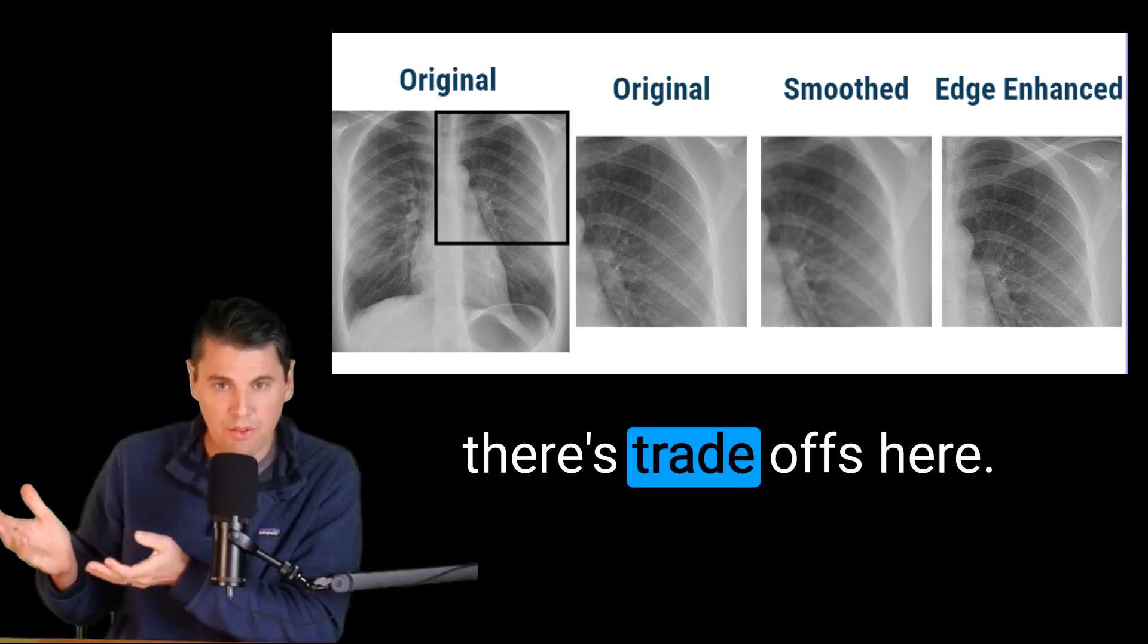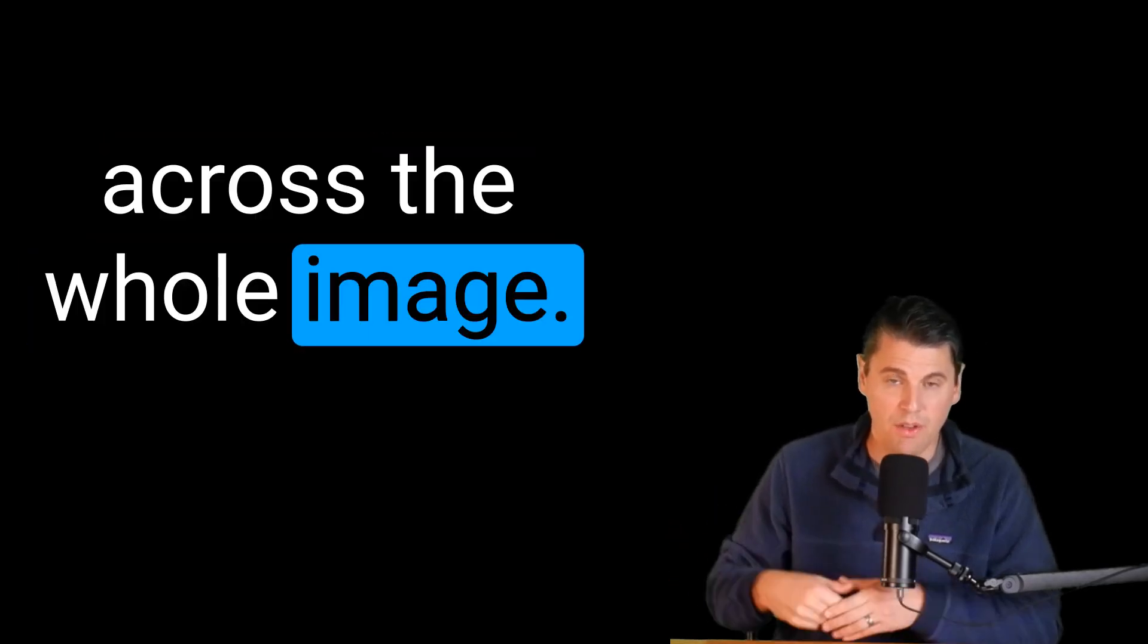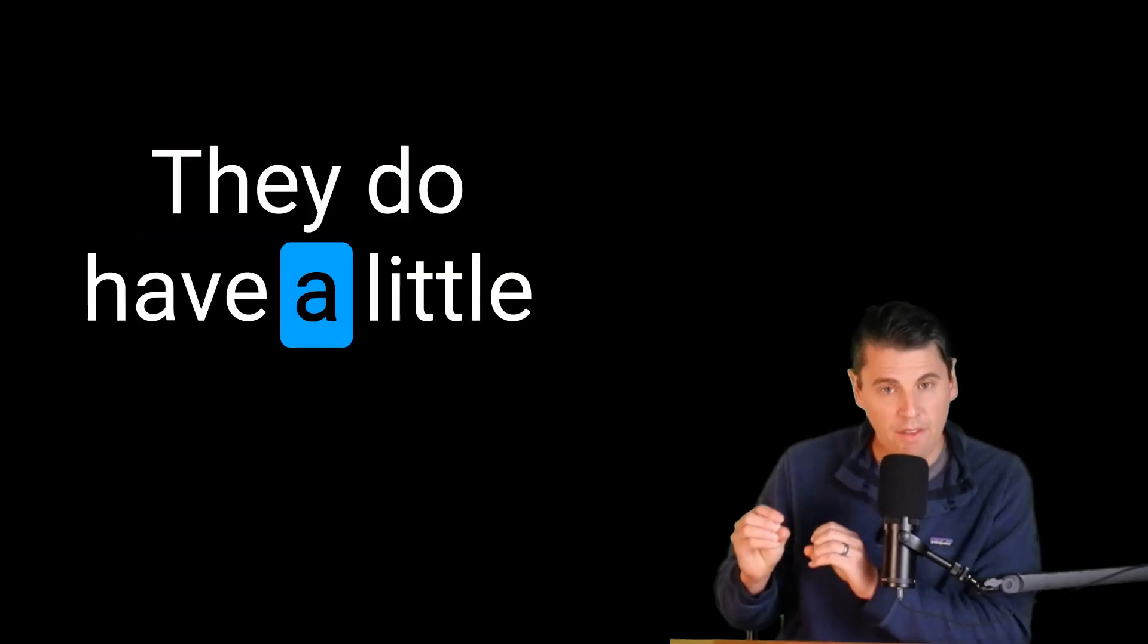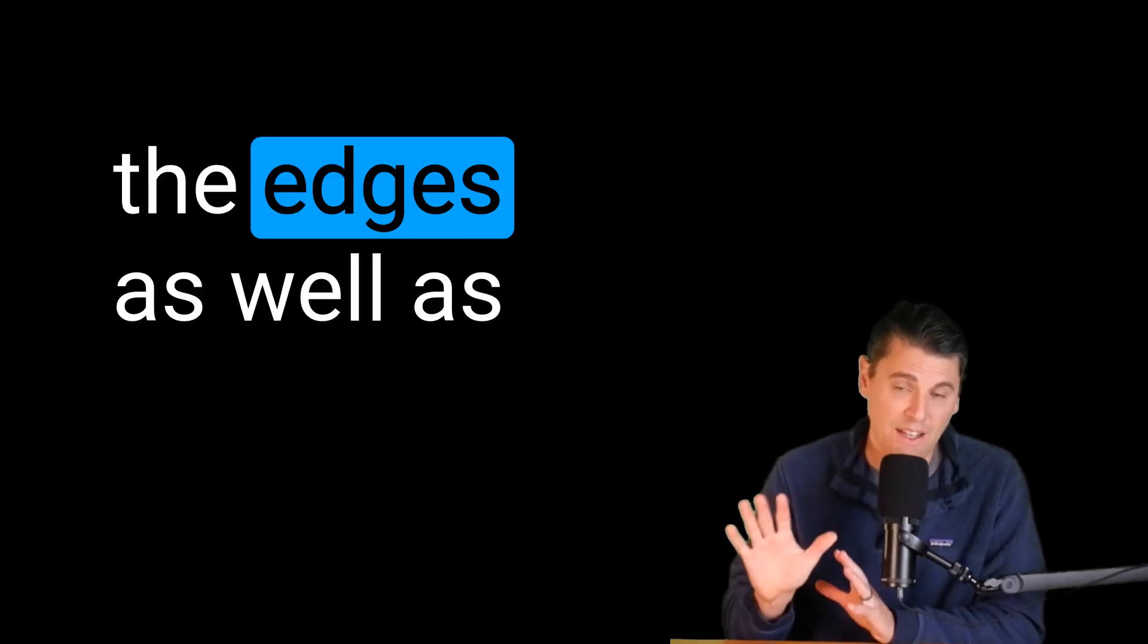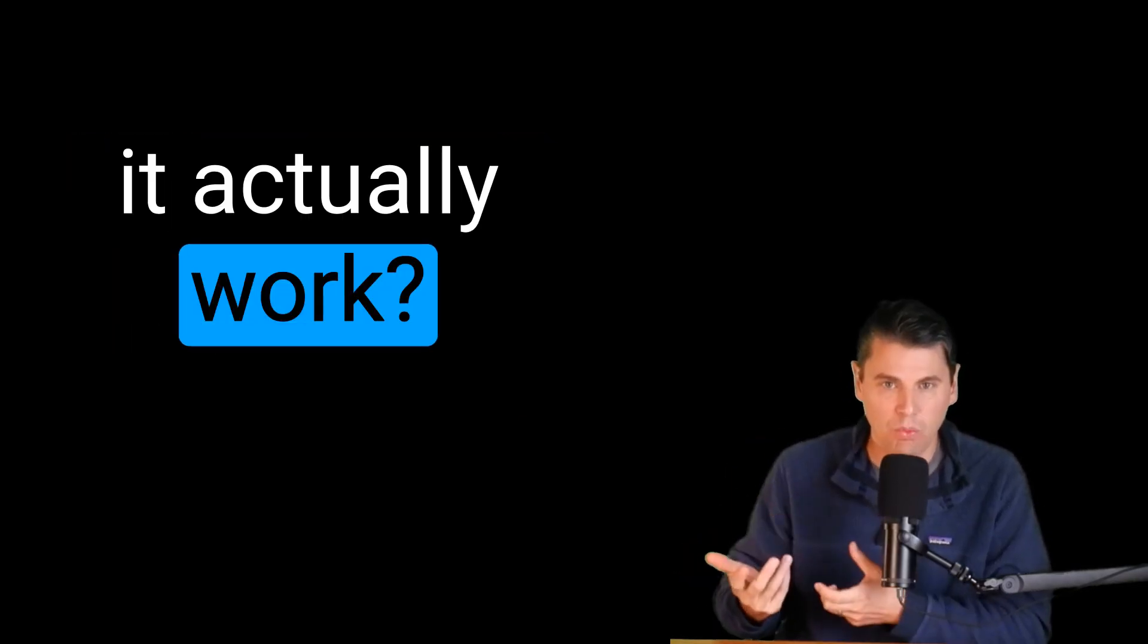We do know there's trade-offs here. They're going to apply the same operation across the whole image. These ones are nice and simple. We can understand them well. They do have a little bit of a disadvantage in that they can smooth the edges as well as smoothing out the noise. But first off, how does it actually work?